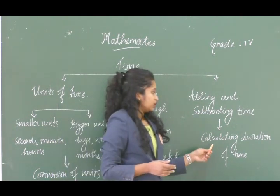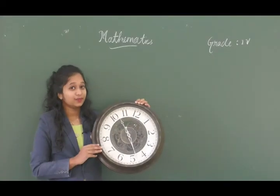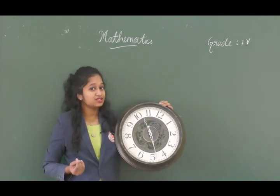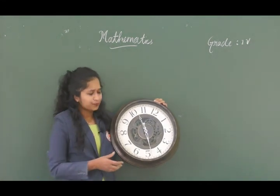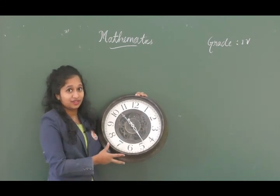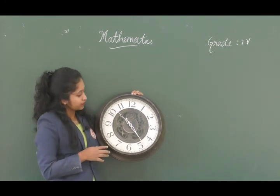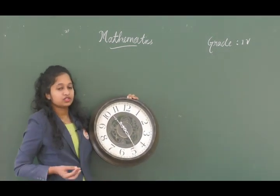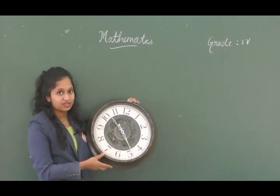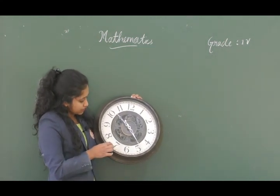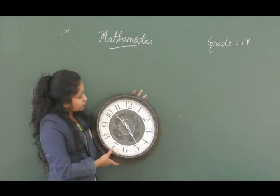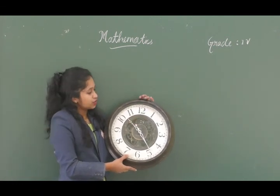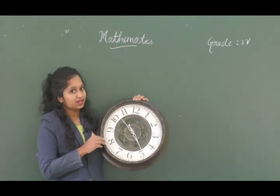This is a clock and you know the units related to time: hours, minutes, and seconds. You can see numbers from 1 to 12, and also the hour hand and minute hand. In some clocks we can also see the seconds hand. There are also smaller divisions — in between each number there are five divisions, which represent minutes.